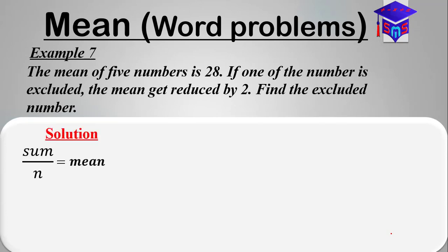Let's quickly look at a solution. We always have to remember our basic deduction: sum over n is equal to the mean. To answer this question, we first have to find the sum of the five numbers. Our n is 5.